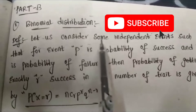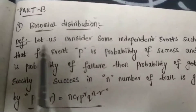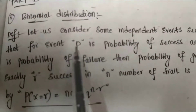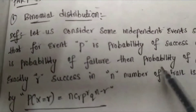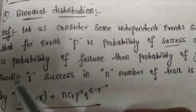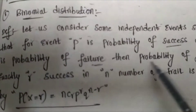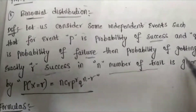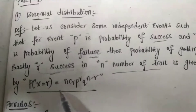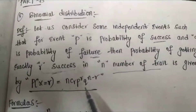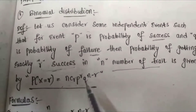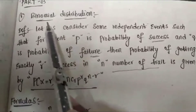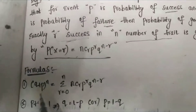That is binomial distribution. The definition of binomial distribution: let us consider some independent events such that for an event, P is probability of success and Q is probability of failure. Then the probability of getting exactly R successes in N number of trials is given by P(X = r) = nCr * p^r * q^(n-r). Using this formula we will solve every problem of binomial distribution.